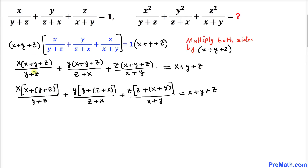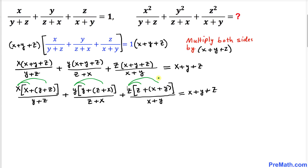In this next step I have tweaked this equation by putting x by itself and then y plus z in parentheses. Likewise in the second term I put y first and then x plus z in parentheses, and similarly for the third term. Now we are going to distribute: x times x is x squared, plus x times y plus z divided by y plus z.